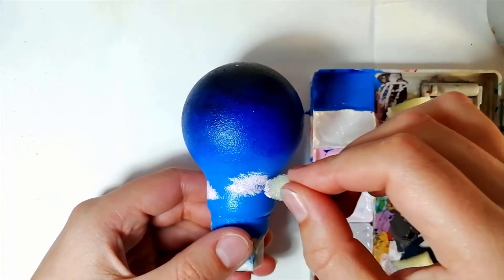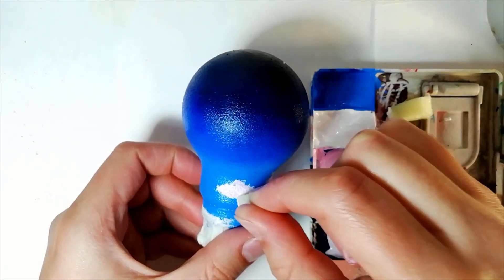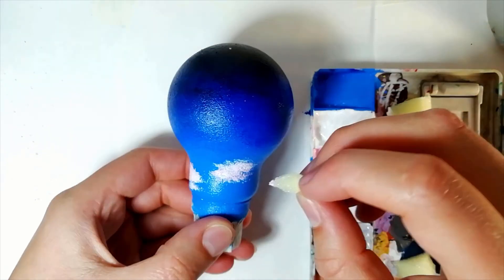To make the clouds look fluffy and wispy, I got rid of most of the paint on the sponge and lightly dabbed it around the edge to create the texture for that type of cloud.